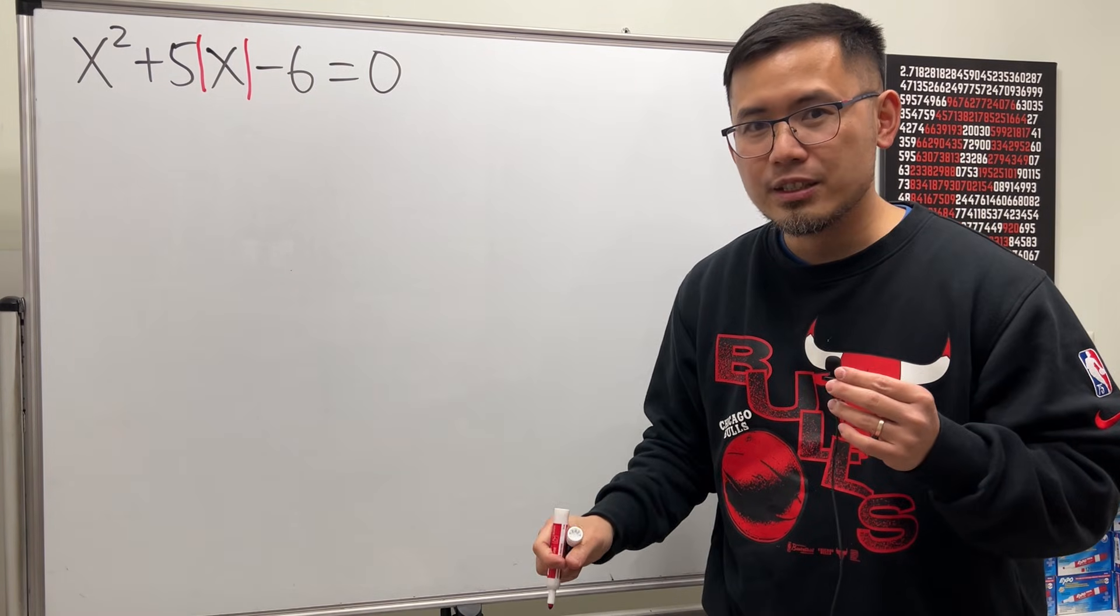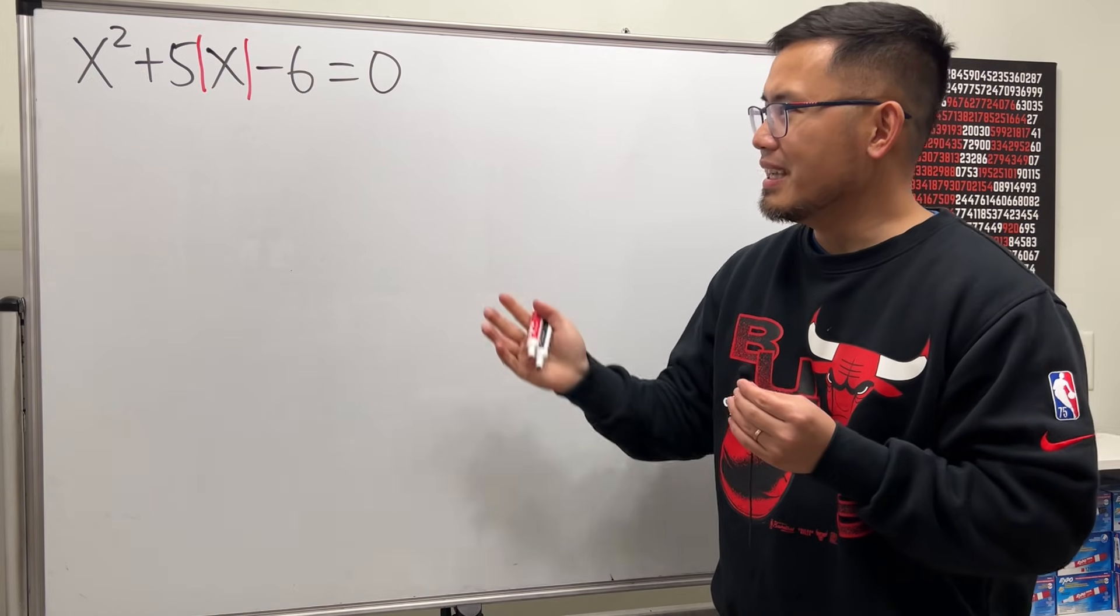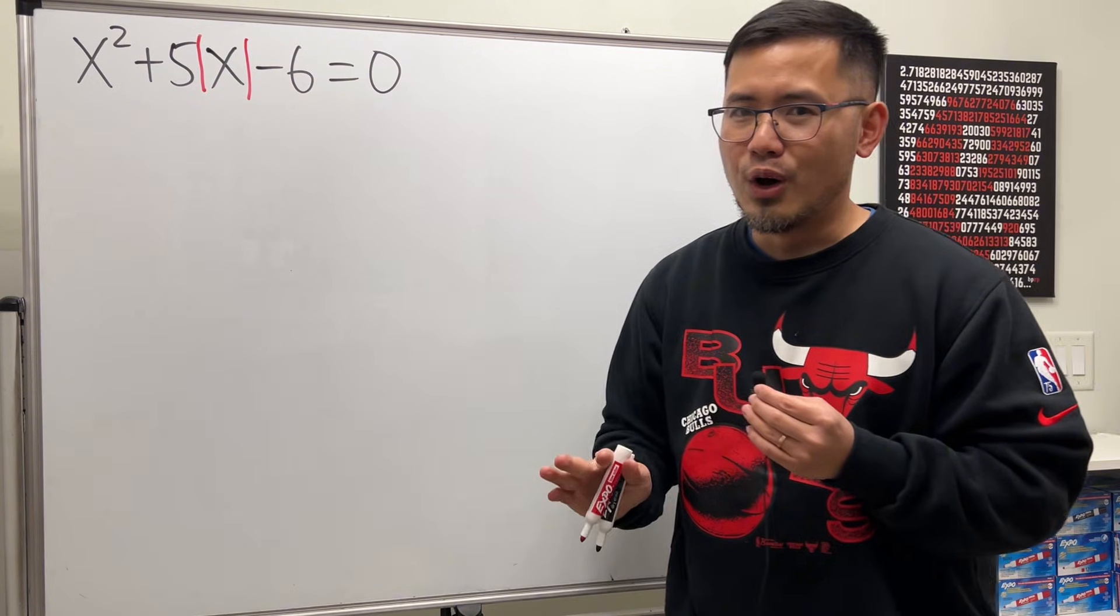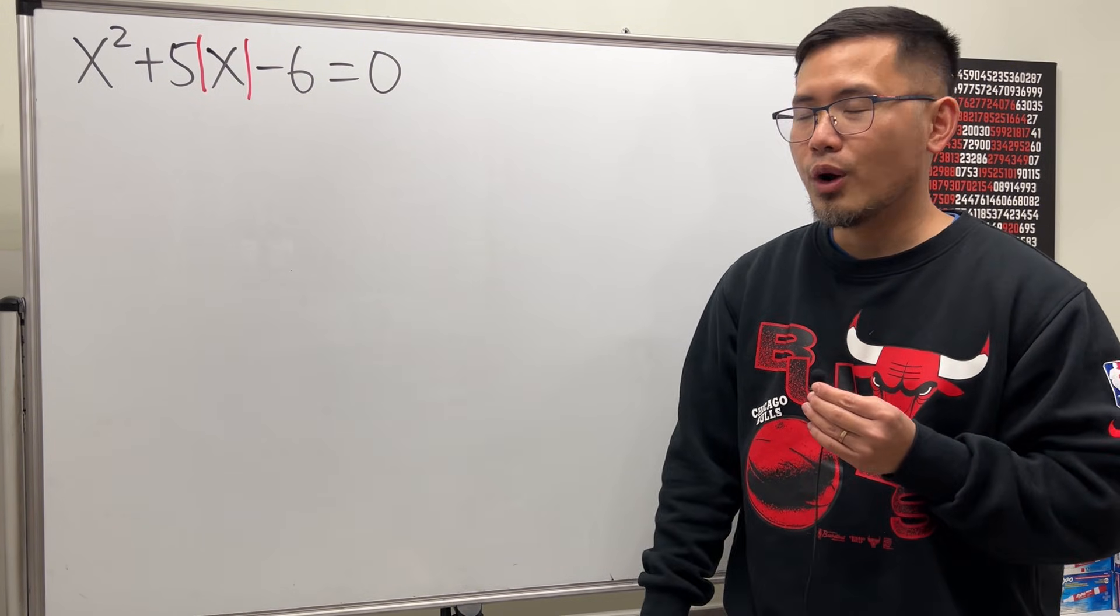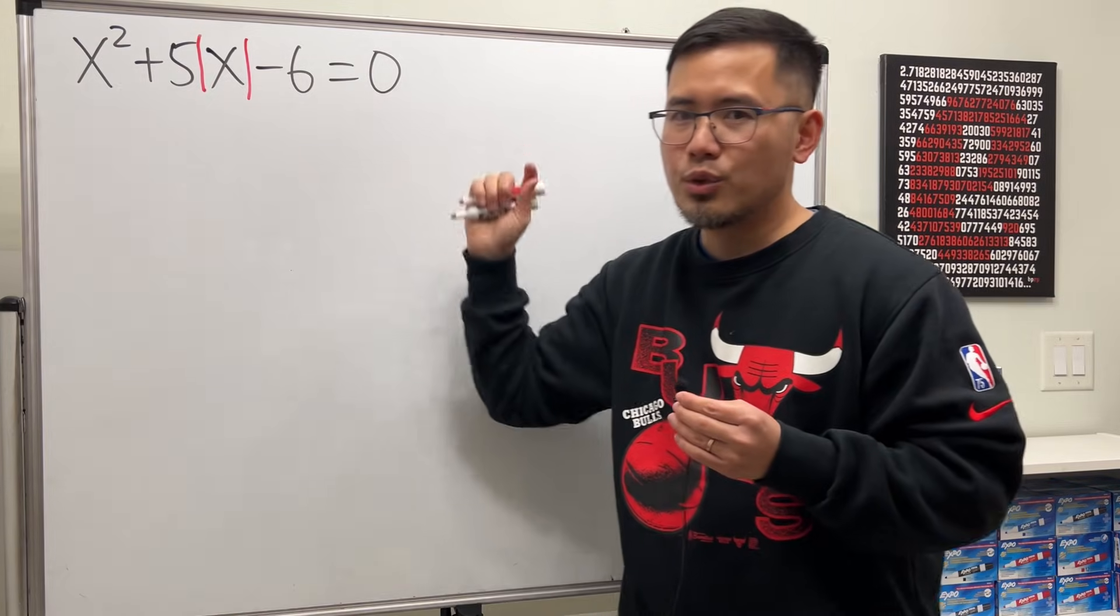And guess what? We will end up with six solutions, just like Michael Jordan, six championships. And I was really surprised, and I tried it with different numbers. No, we don't end up with six solutions all the time by putting absolute value around this x in the quadratic equation.